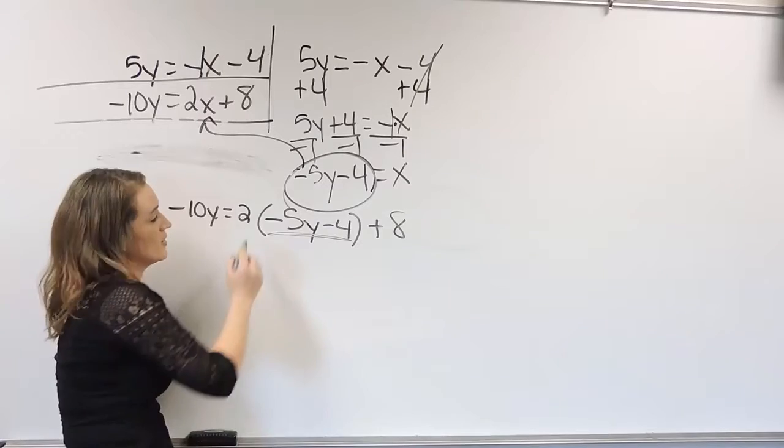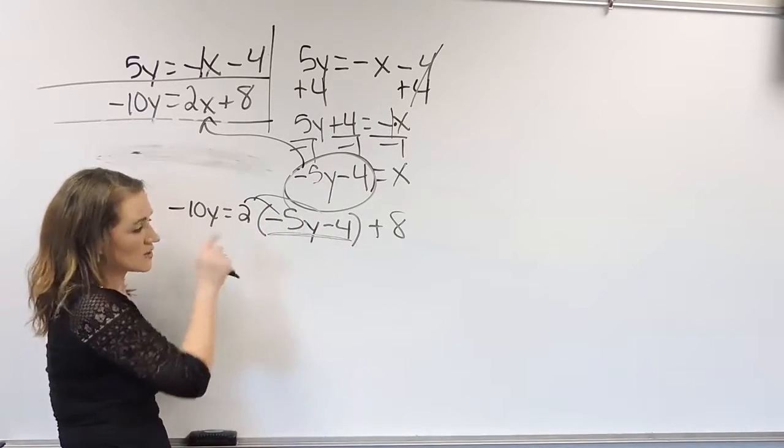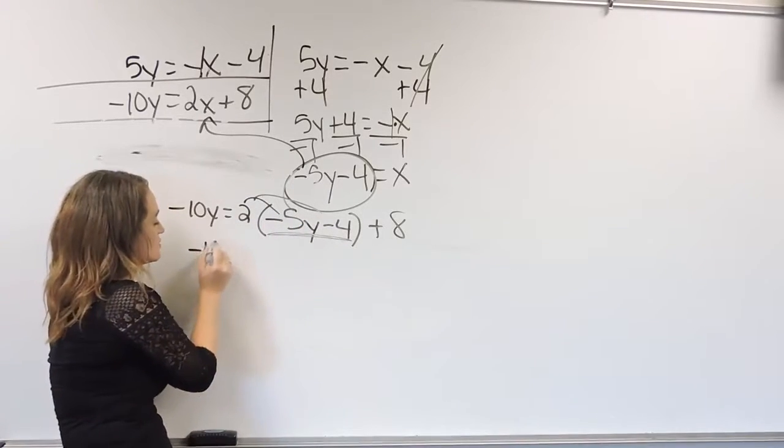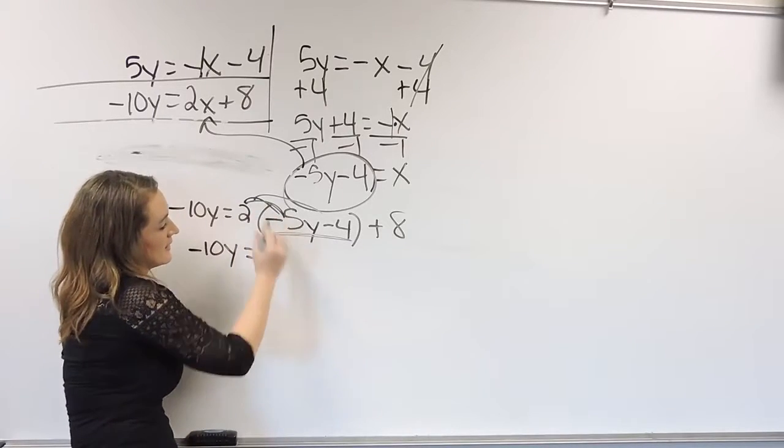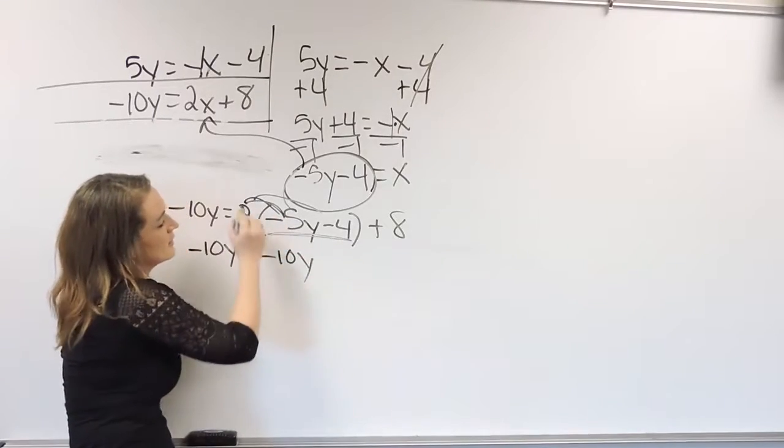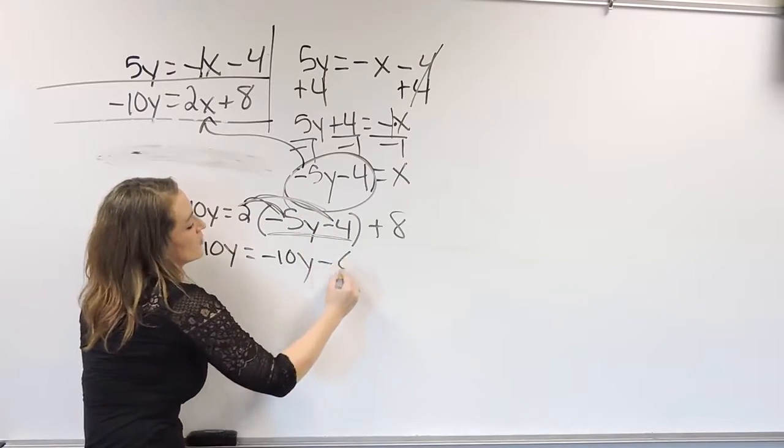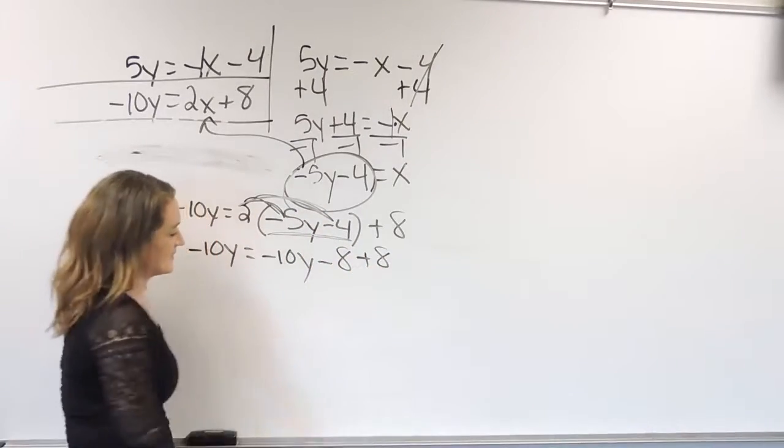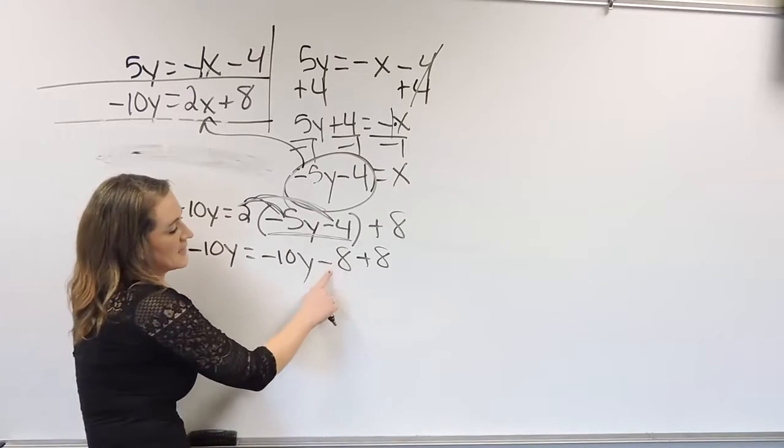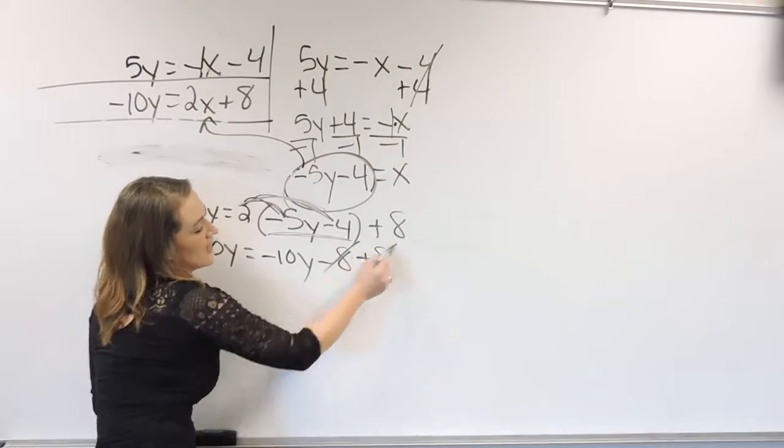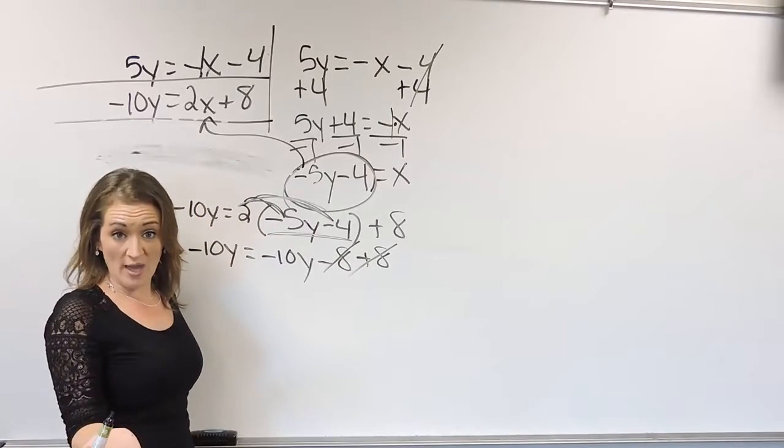Okay, so we need to solve this equation here. So if we need to solve this equation, we're distributing that 2. So drop down the negative 10y is equal to negative 10y, negative 8 there when we multiply, plus 8. All right, so let's see. Let's do some simplifying. Negative 8 plus 8. Well, negative 8 plus 8 is 0. That goes away.